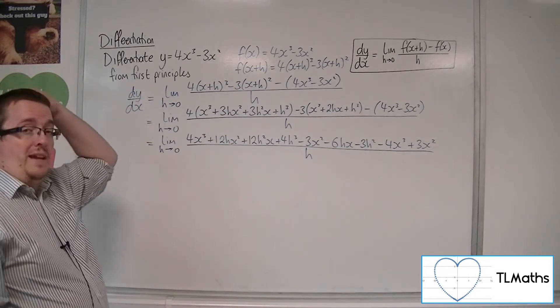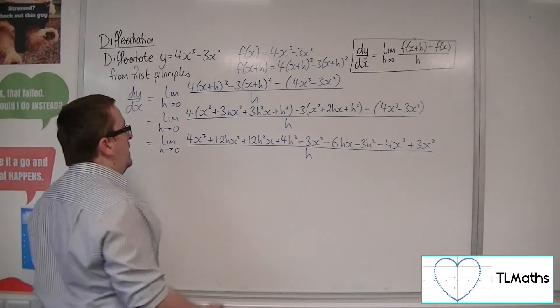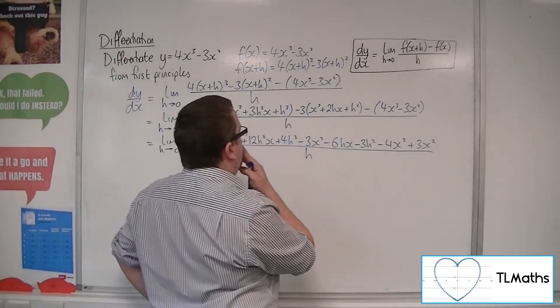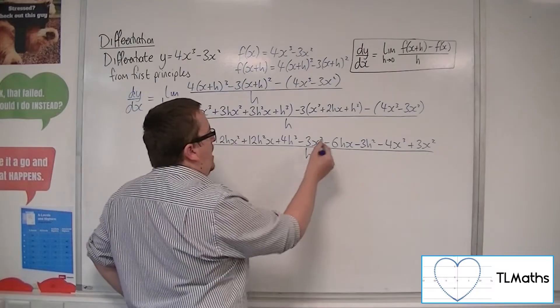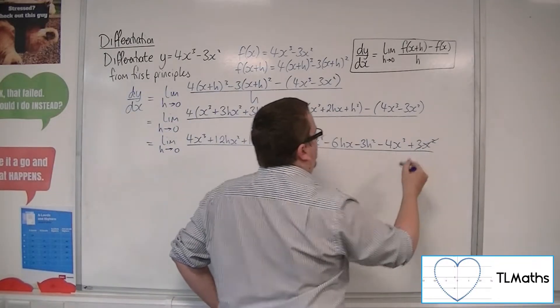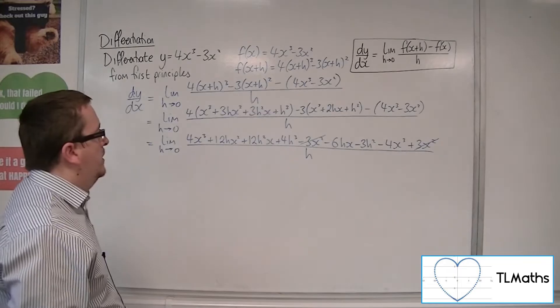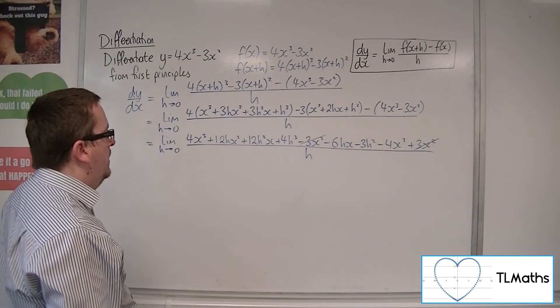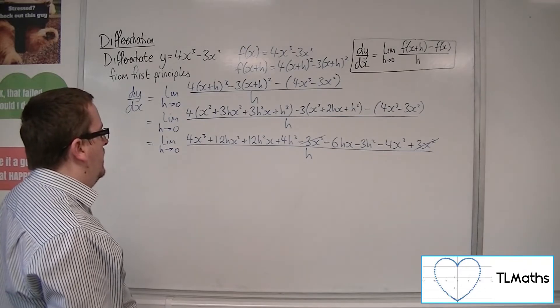So let's spot some cancellations while we're here. So we've got a negative 3x squared with a positive 3x squared. We've got anything else? Just having a quick look through.